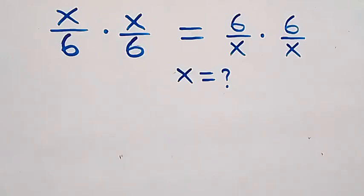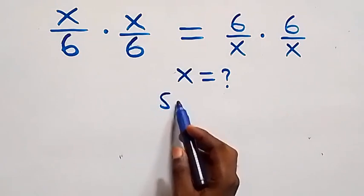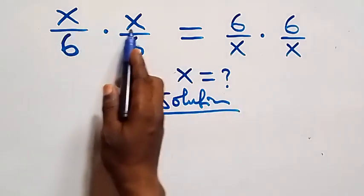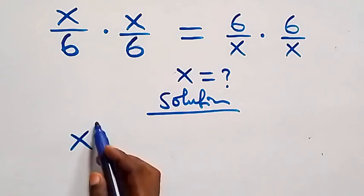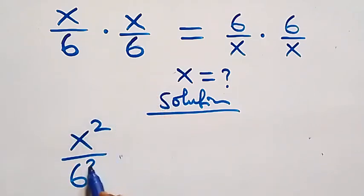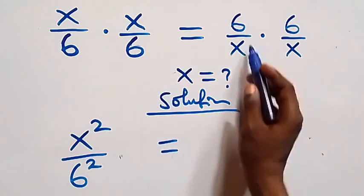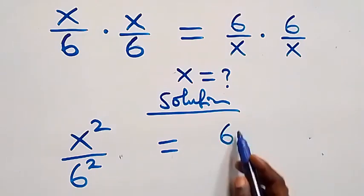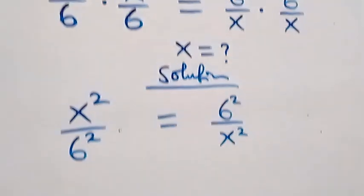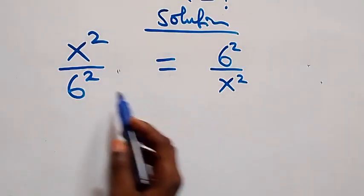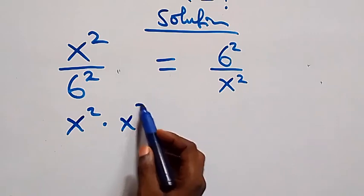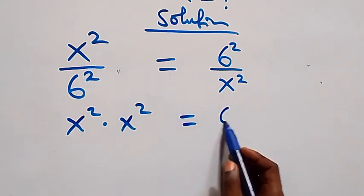Hello, you're welcome. How to solve this nice algebra equation. From what we have here, we can multiply directly: x times x gives x squared, and we also have 6 squared on the other side. From here we can cross-multiply, and we have x squared times x squared equals 6 squared times 6 squared.